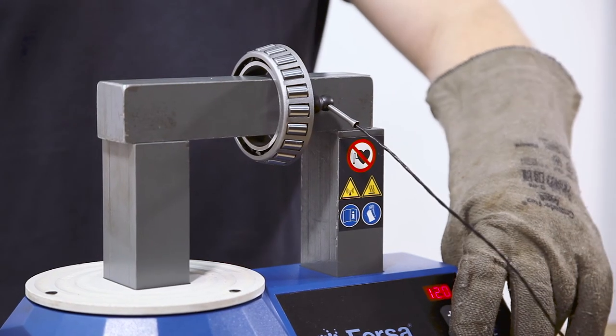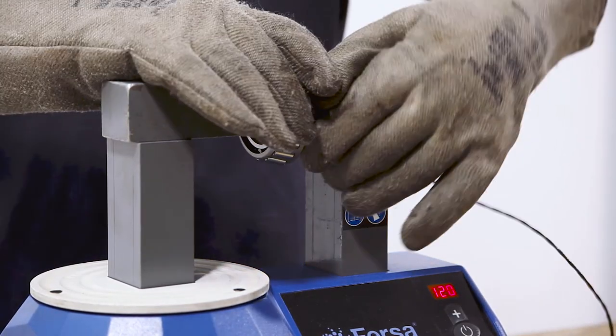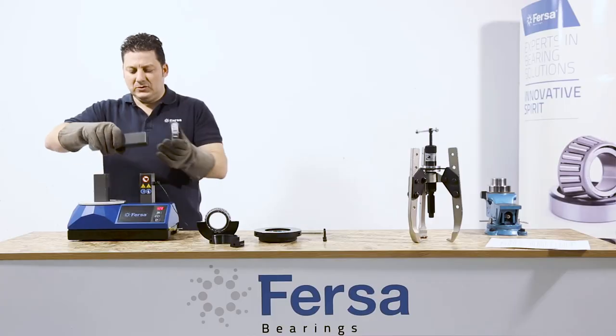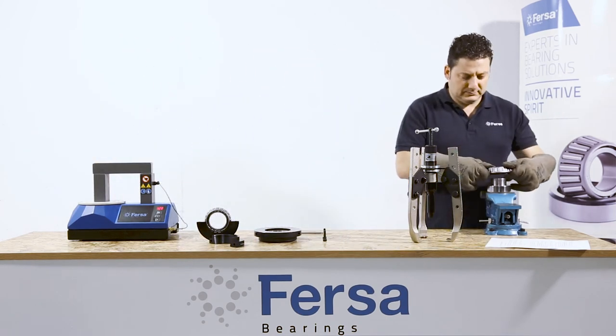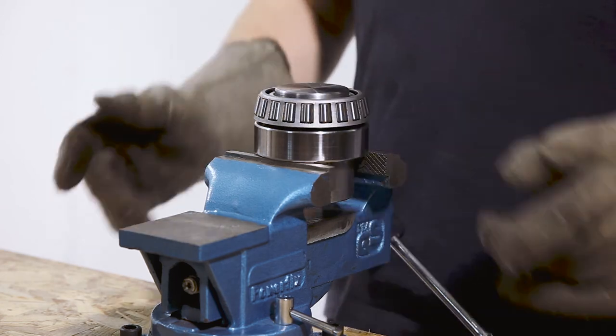We will use the induction heater to heat the whole bearing evenly. If we use a torch, we can't control the temperature and we are only heating one small area. This can lead the bearing to deform, damaging the shaft.